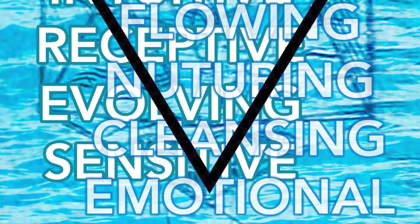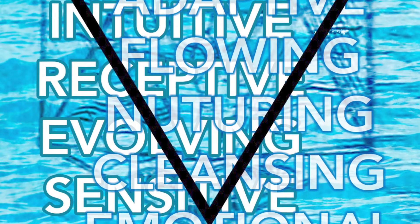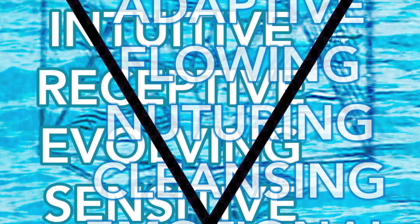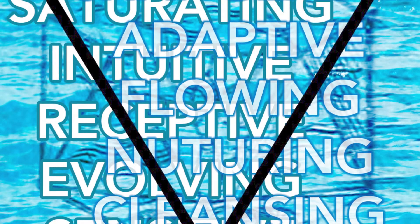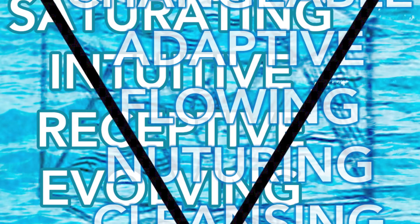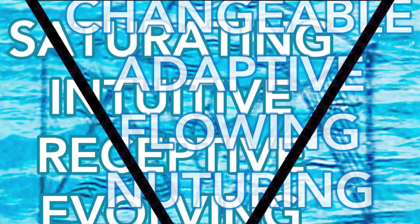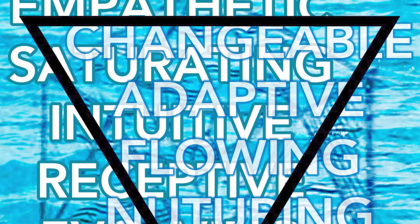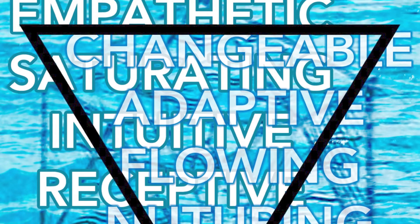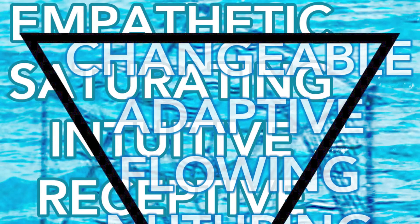Water is connected to emotions, cleansing, receptivity, nourishment, comfort, and the ability to flow. The icosahedron has 20 sides of triangles connected to the sacral chakra, emotion, and biological creation potential, and the west.